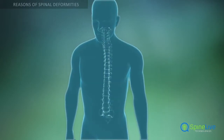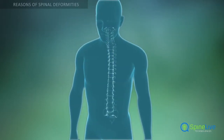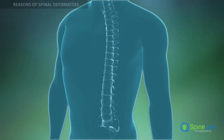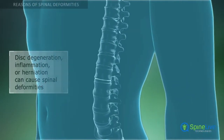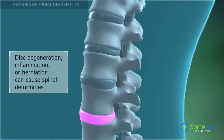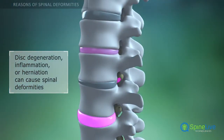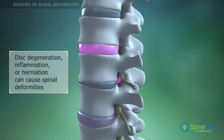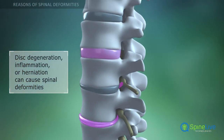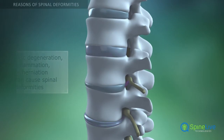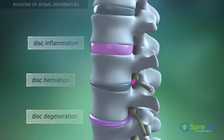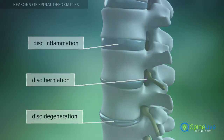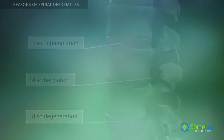Another cause of spinal deformities is the pathological changes of the intervertebral discs that lie between the vertebrae. These can occur due to disc degeneration, inflammation, discitis, or a hernia in one or several discs.